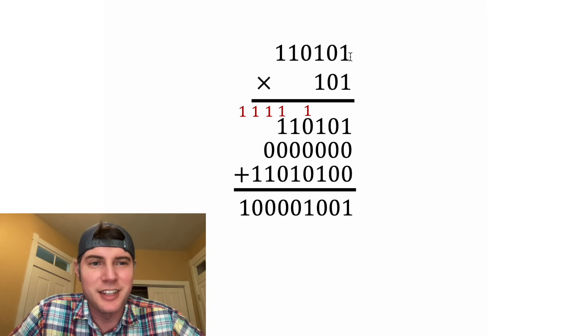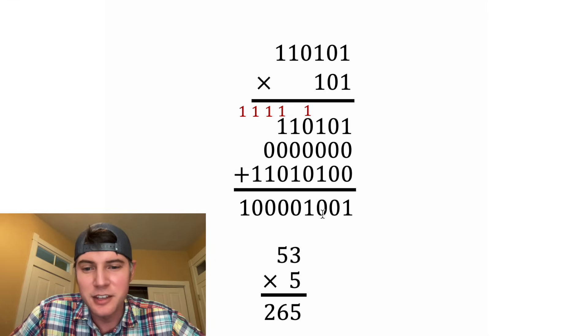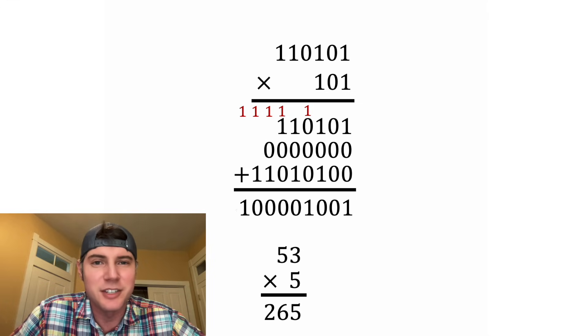So this is the answer. And here it is in decimal notation: this is 53, this is 5, and this right here is 265.